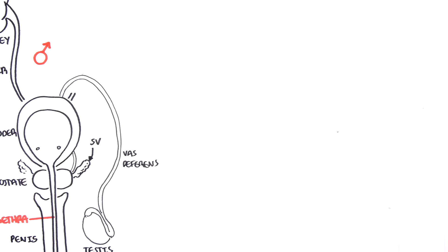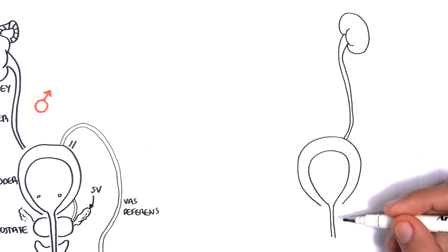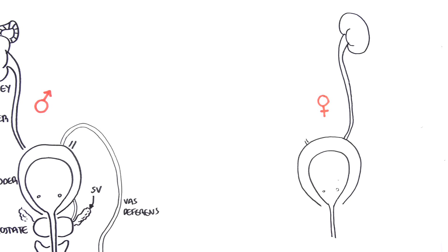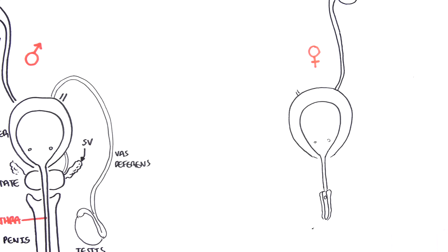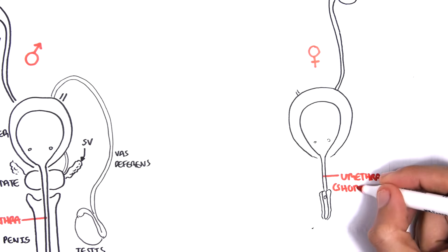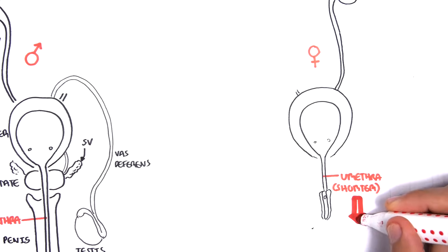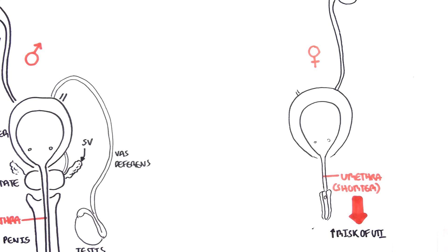The female anatomy is very similar, except importantly they have a shorter urethra. With a shorter urethra, they are at increased risk of developing UTI.